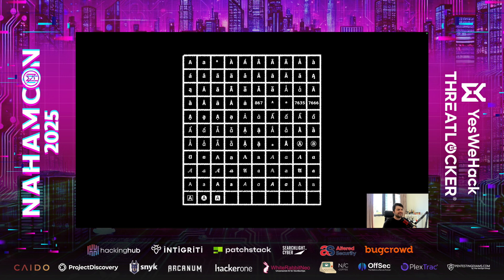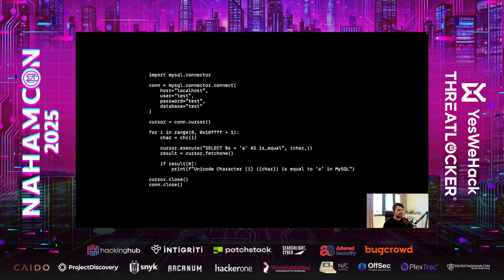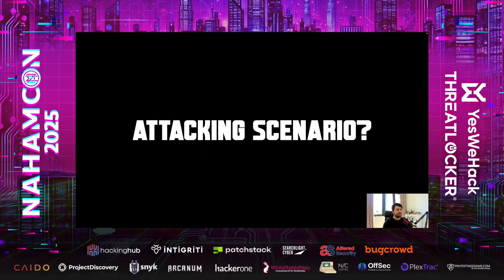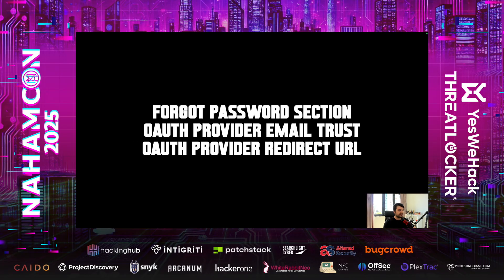Where does this odd A come from? Just pick a letter — A, B, C, anything — and run a simple fuzzer. You will quickly find all characters that get treated like A. The script connects to the database and runs a select query to find characters that behave like A. It's simple, nothing special about this script. Now, what's the attack scenario? I will walk through three attack scenarios: one, the forget password section; two, auth provider email trust; and three, auth provider redirect URL. Let's go for the first one.